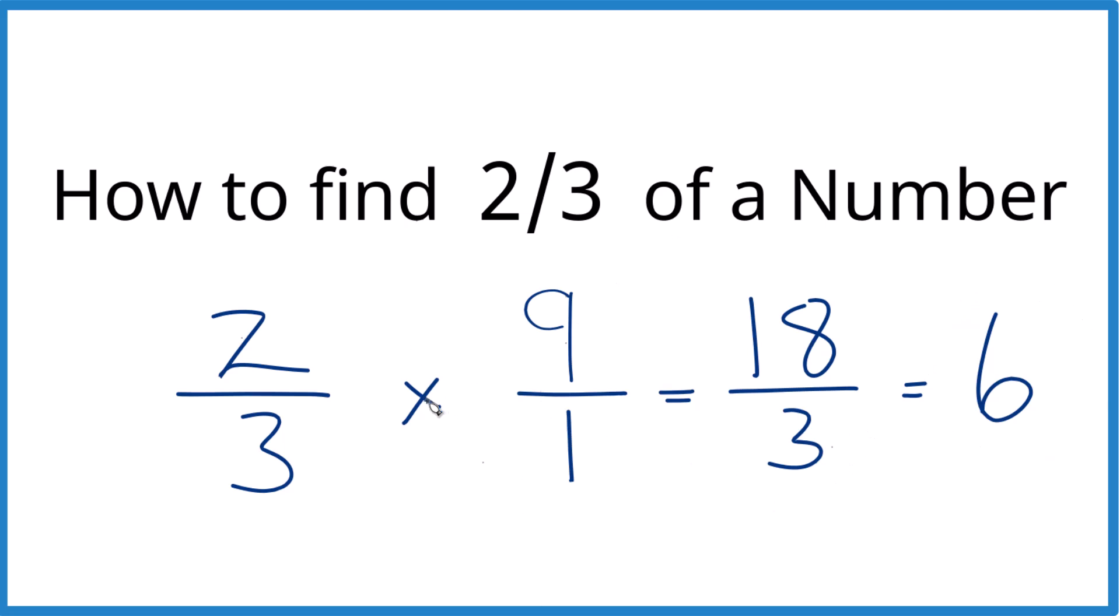So instead of of, we just multiplied. We made the number over one just so everything lined up. And then we got our answer. Give it a try with this one.